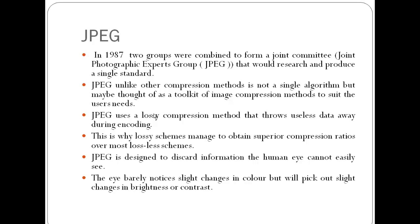JPEG is designed to discard information the human eye cannot easily see. The eye barely notices slight changes in colors but will pick out slight changes in brightness or contrast. We focus around this to develop the algorithm.